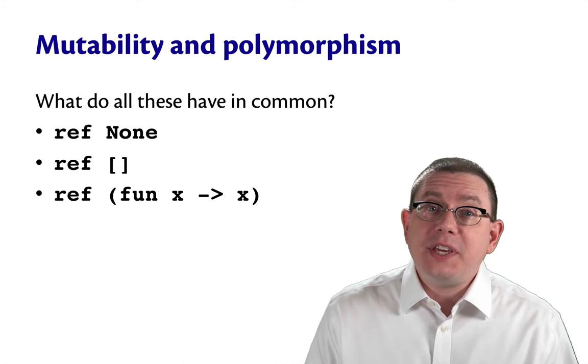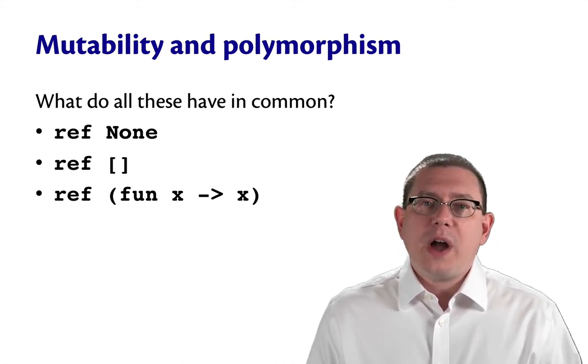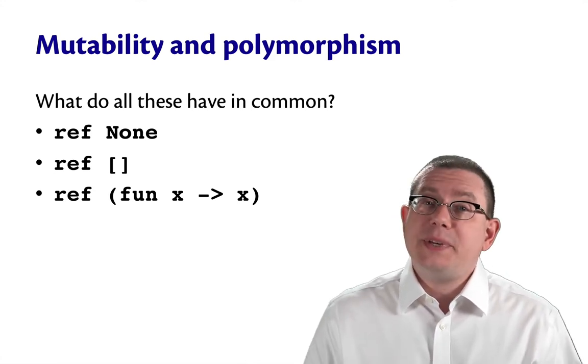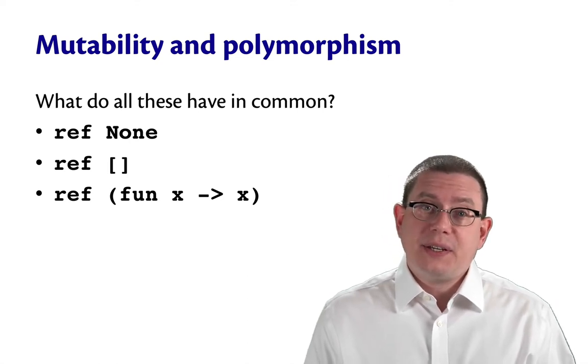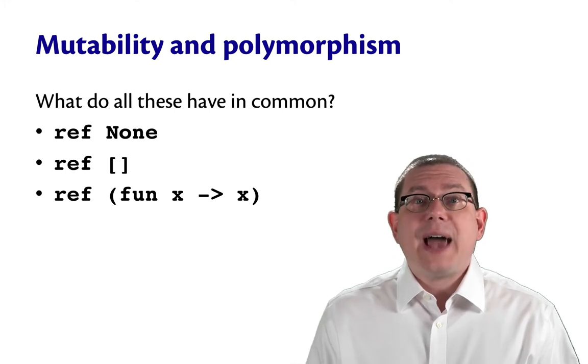What do all of these expressions have in common? Well, they're all refs, and they're all refs to something of a polymorphic type. What type is none? It's an alpha option. What type is the empty list? It's an alpha list. What type is the identity function? It's alpha arrow alpha.